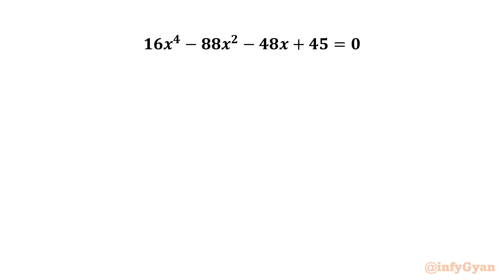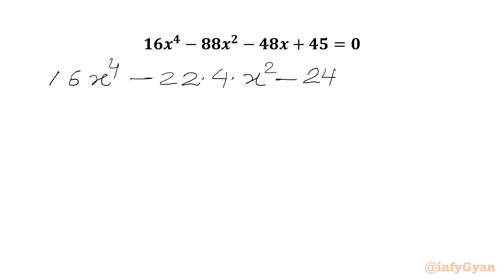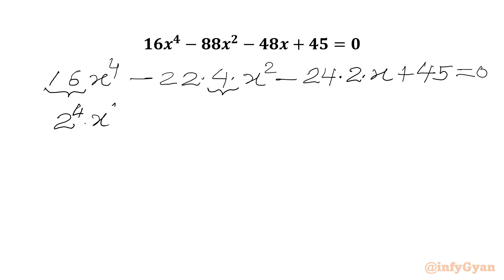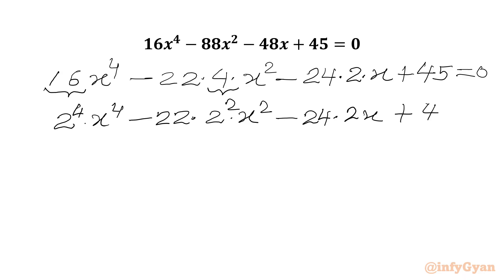We are going to calculate all four solutions. Let's get started by writing our equation: 16 times x⁴ minus 88, which we will factorize as 22 times 4 times x². Then we have 48, which we will write as 24 times 2 times x. Then our last term plus 45 equals 0. Now I can write 16 as 2⁴ and 4 as 2², so I can write 2⁴ times x⁴ minus 22 times 2² times x² minus 24 times 2x plus 45 equals 0.